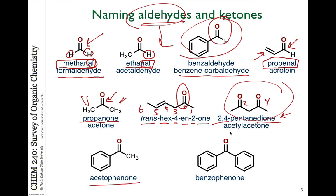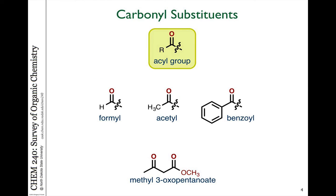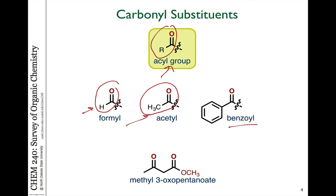Some common names such as acetophenone and benzophenone are seen often, especially with aromatic compounds. If we want to use carbonyl compounds as substituents on a larger molecule, we can use the acyl group to refer to the carbonyl and whatever else is attached. So if it's a hydrogen attached, this is a formyl group. If it's a two-carbon group, it's an acetyl group — benzoyl, for example.